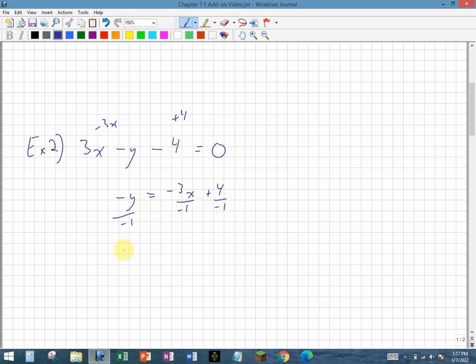My final step to get rid of this negative sign in front of the y is to divide everything through each term by a negative 1. On the left-hand side, I get just y on its own. Now it's finally isolated. On the right-hand side, negative 3 divided by negative 1 is a positive 3x, and 4 divided by negative 1 is a minus 4.